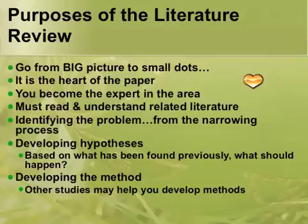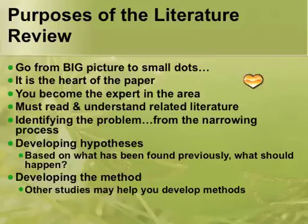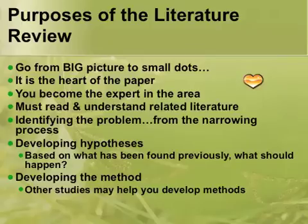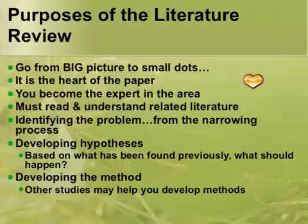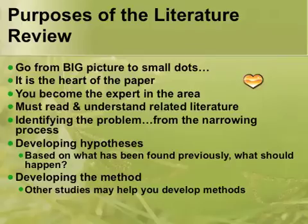A thesis is for master's students conducting a research study, usually based on previous research. A dissertation is typically done at the doctoral level and requires original research — nobody else has done a study like it before. For a master's thesis, it does not need to be original research. For journal articles, theses, and dissertations, the literature review drives the research — it ties everything to the research problem and helps develop the conclusions at the end of the paper.